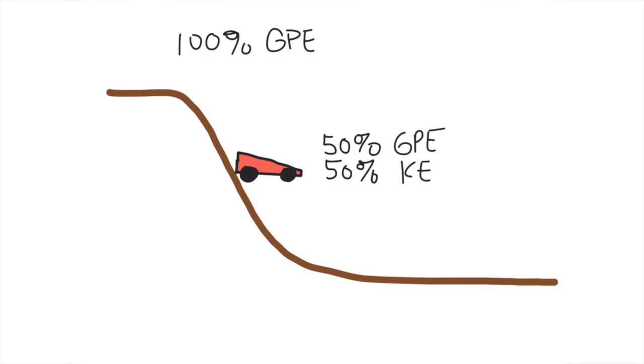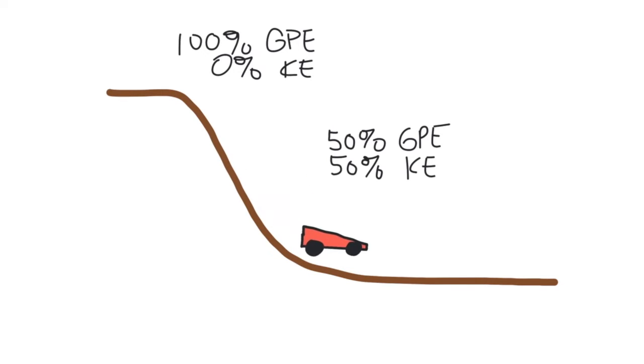Remember at the top of the track we had 0% kinetic energy. As the car continues to move, once it gets down to the bottom we now have 100% kinetic energy and 0% gravitational potential energy. That would be conservation of energy as it applies to potential and kinetic energy.